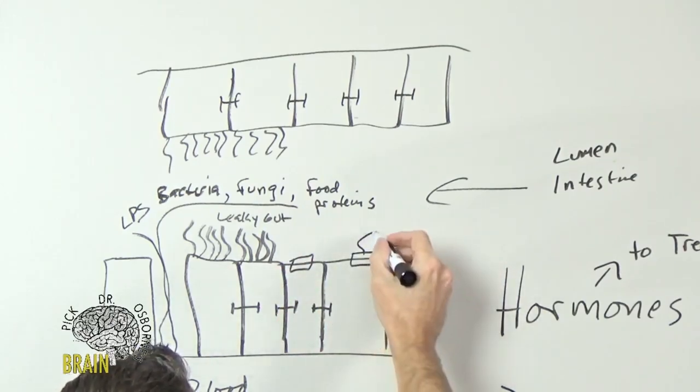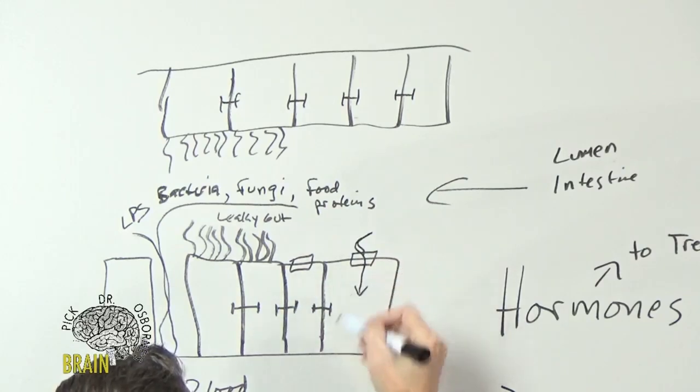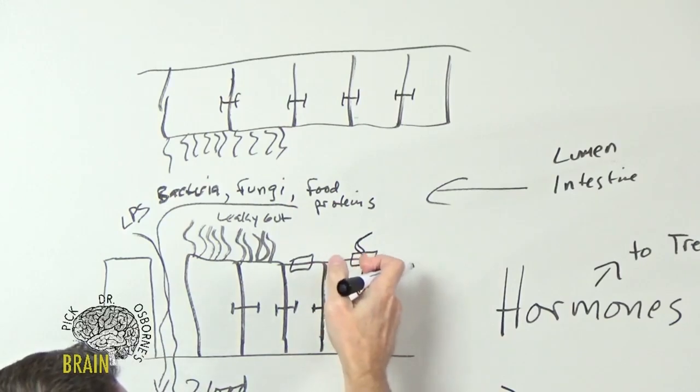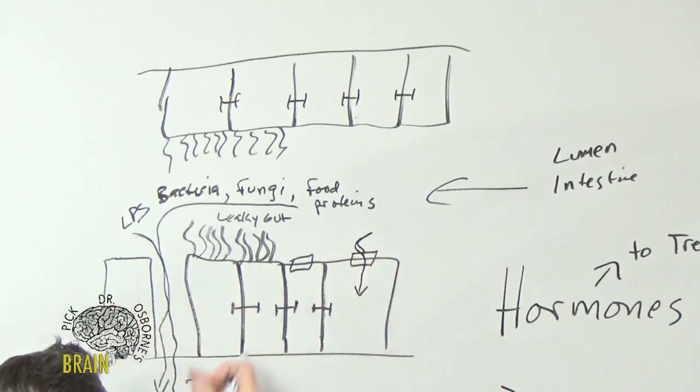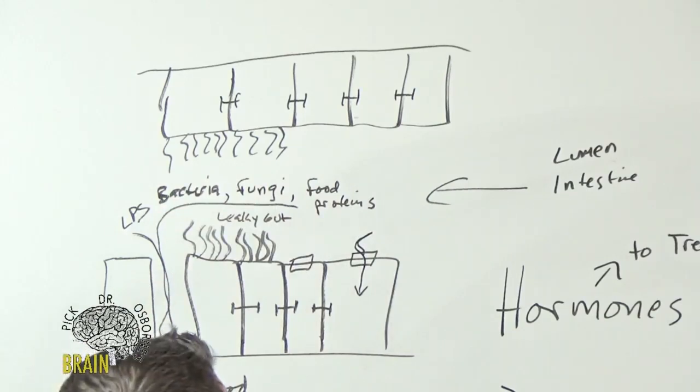They have their little receptors or doorways on the surface of these cells that are gated, so things that are supposed to be let in are checked and allowed to come in. Think of this as the guardian at the gate. If your guardian is on vacation, you get this leaky gut.